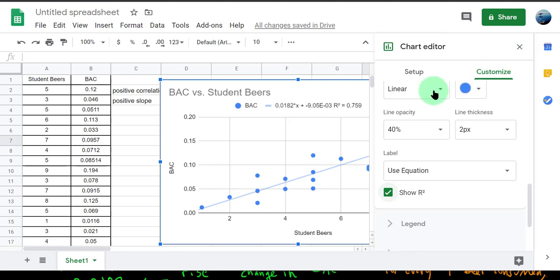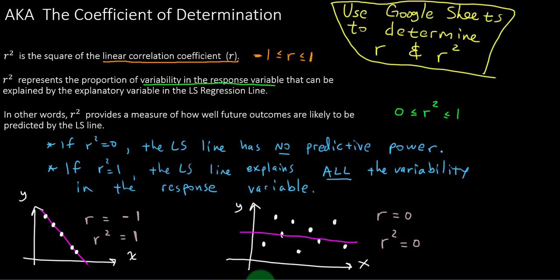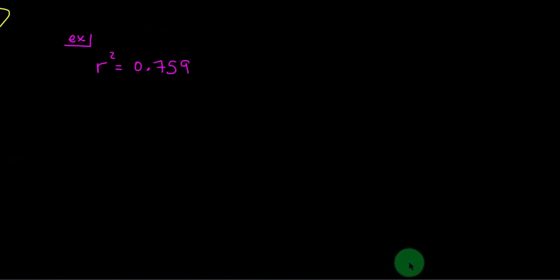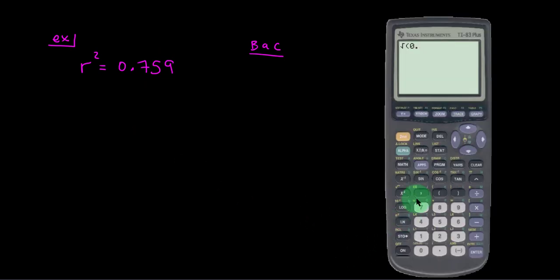And there it is. For this data set, it was 0.759. Let's talk about that. I'm going to write that down. And then we're going to talk about that. From the blood alcohol content example from Google Sheets, we got that the r squared value was 0.759. Now there was no option from Google Sheets to calculate the correlation coefficient, but we can just square root this to obtain that correlation coefficient. Square root of 0.759 is about 0.8712.